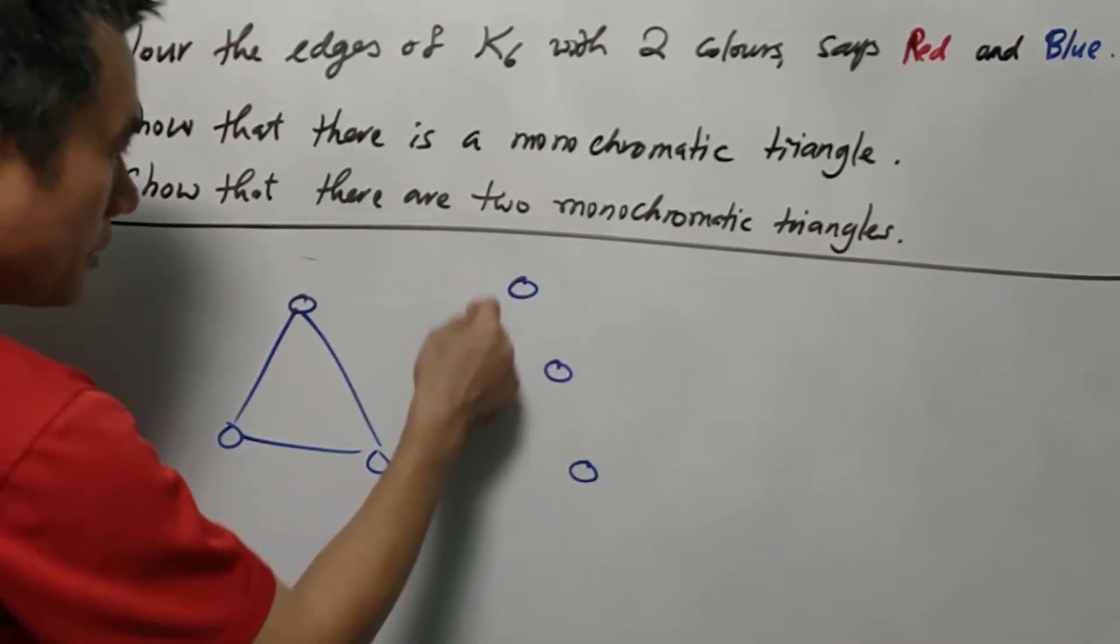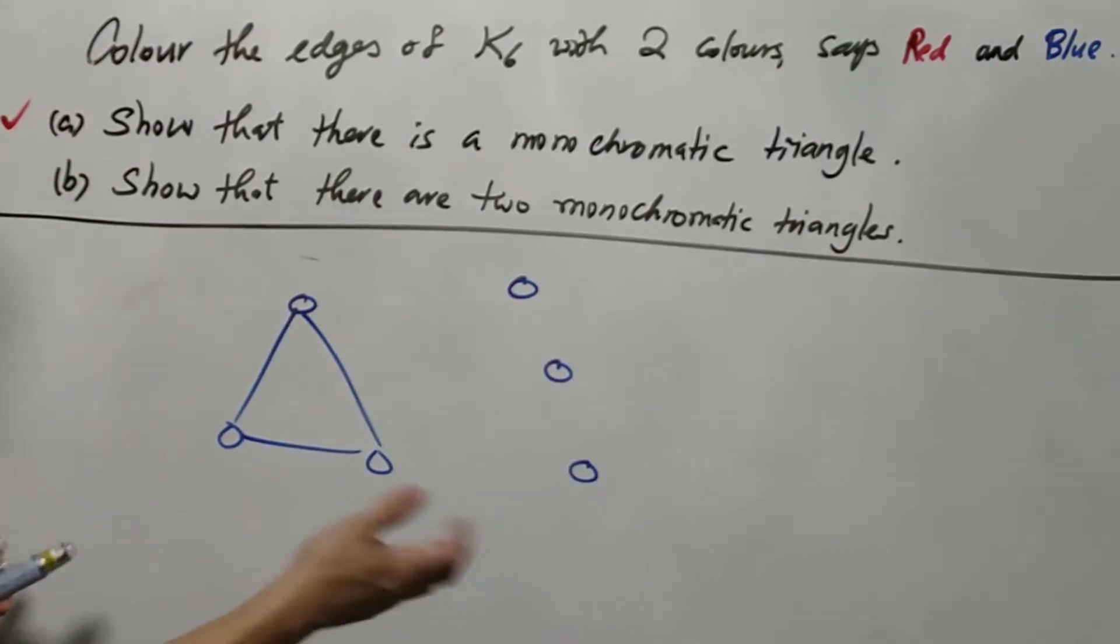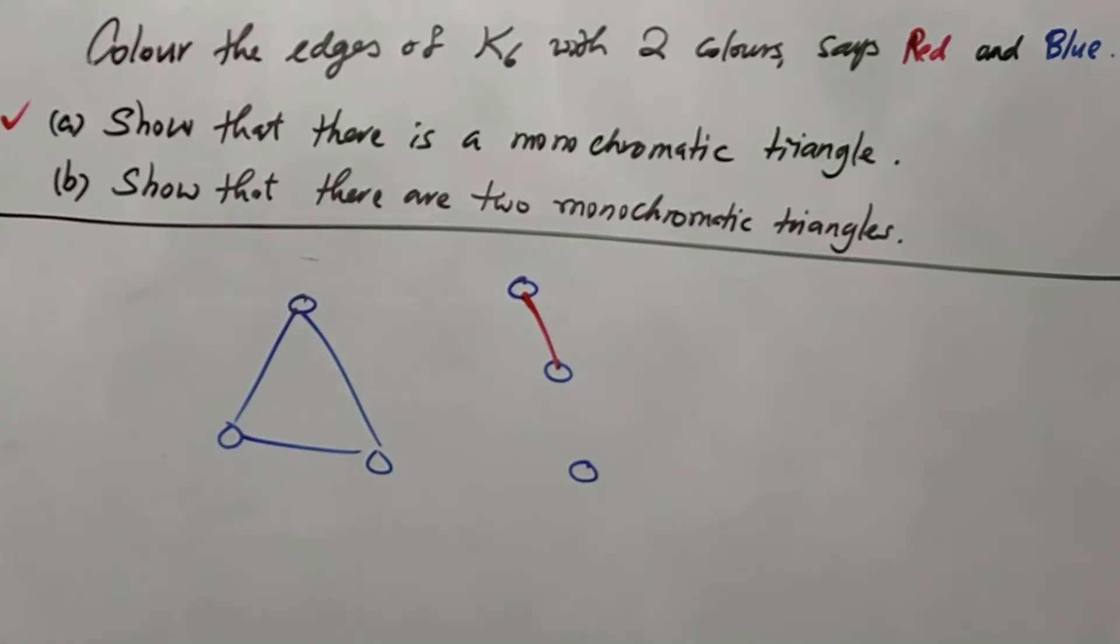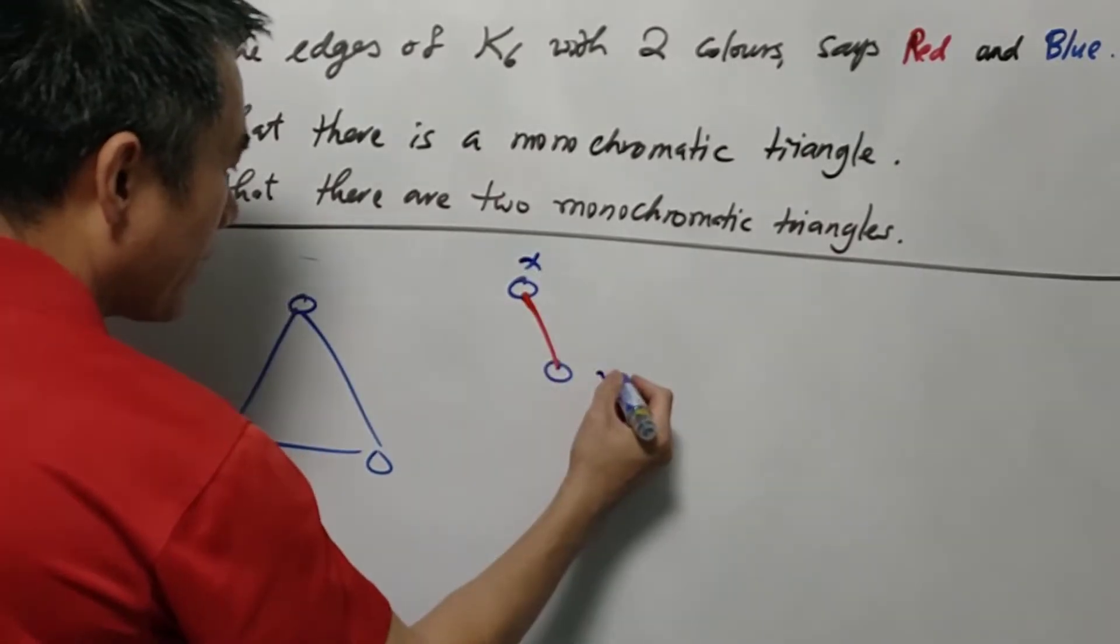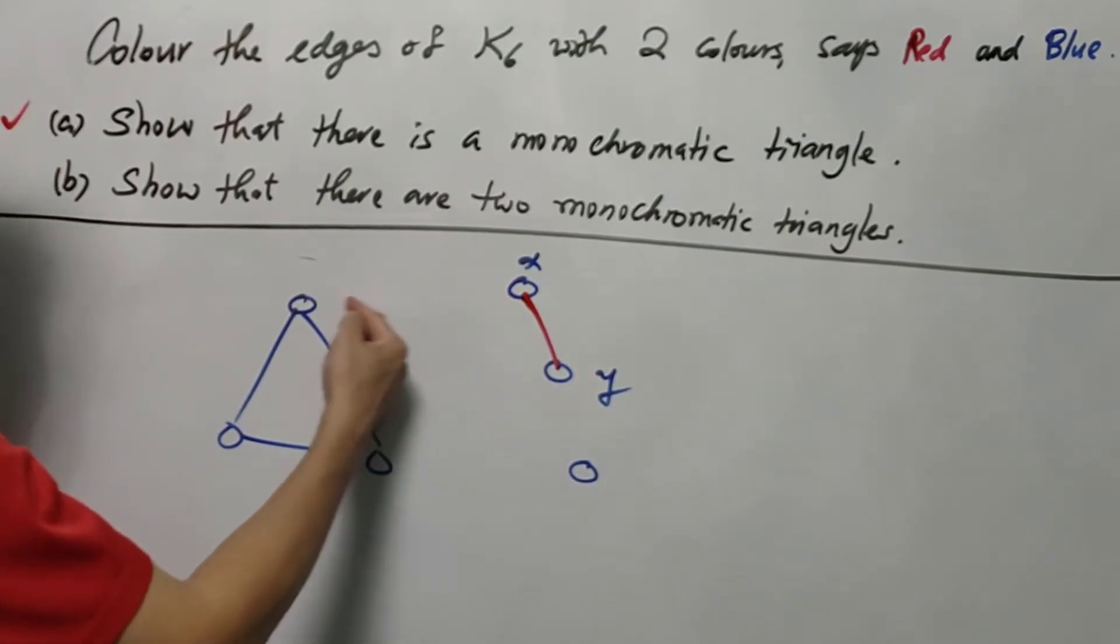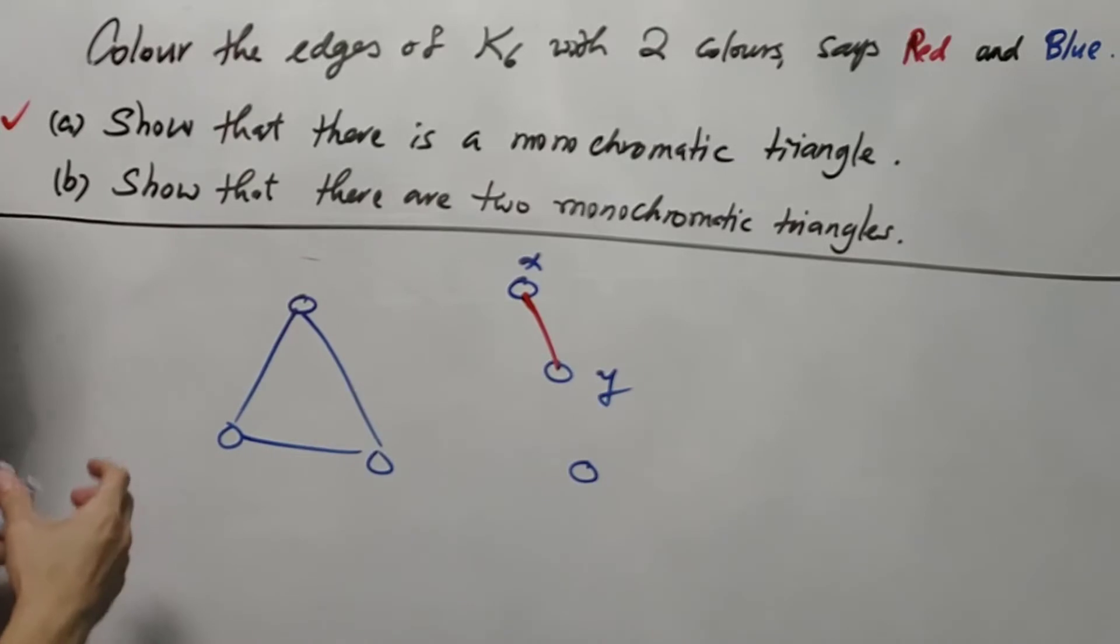Then we're still left with three vertices. Now, suppose these three vertices form another blue triangle, then we are done. If not, there must be an edge using the color red, say this at x and y. For each of the vertices x and y, there must be three edges joined to these triangles. If we suppose that there's no two monochromatic triangles, we need to avoid using two blue edges here.